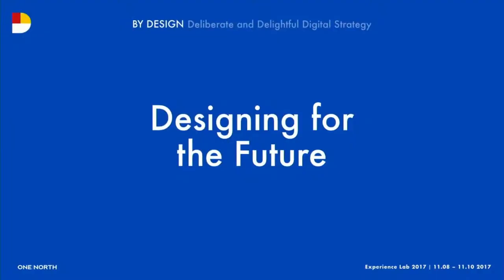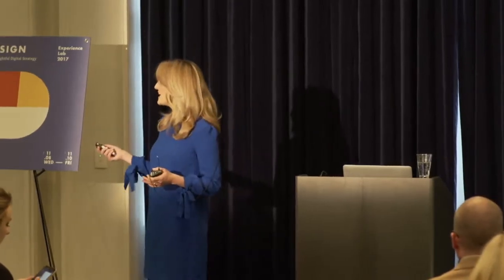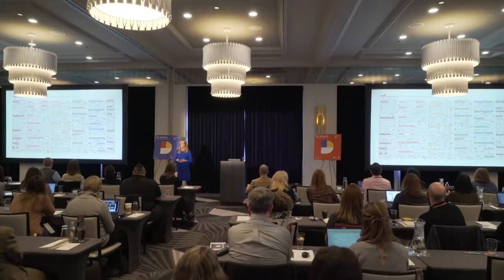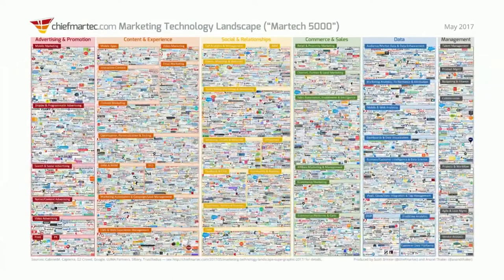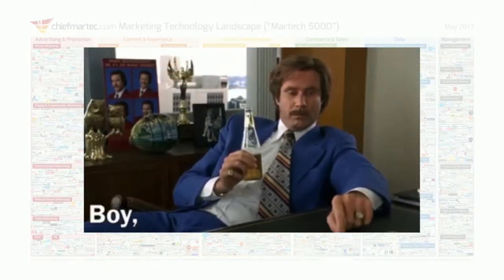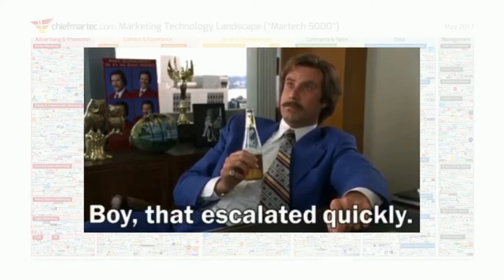I'm really excited to talk to you guys today. We have a fun session plan — a good way to ease back in after lunch. I'm going to be talking about designing for the future and sharing what's next in a couple different disciplines. It's crazy how fast things change. Let's fast forward to 2017 — this is the state of marketing technology. Starting from the 90s when you had one option to join the internet to this — that's a lot of changes fast.